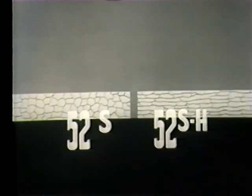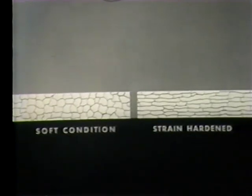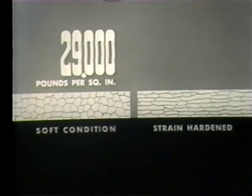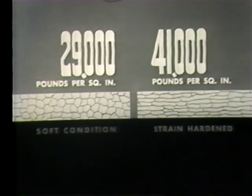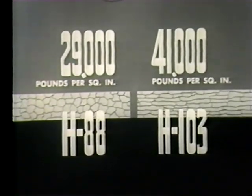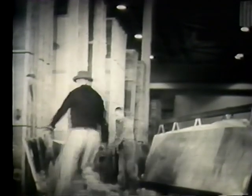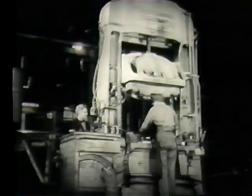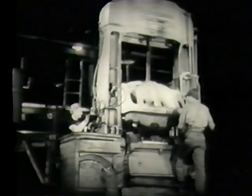For example, strain hardening caused by rolling or stretching a specimen of aluminum alloy 52S might increase the alloy's tensile strength from 29,000 pounds per square inch to 41,000 pounds per square inch, and raise the metal's Rockwell hardness number from H88 to H103. The primary function of the various forming methods is to convert the aluminum alloys into desired shapes. Strain hardening accompanies these cold working operations and in extreme cases, annealing between operations may become necessary.